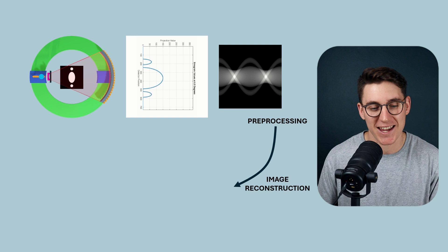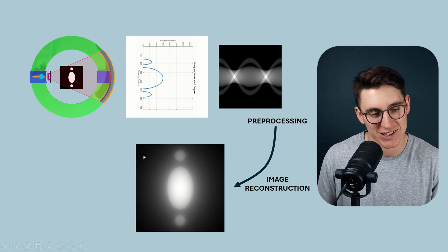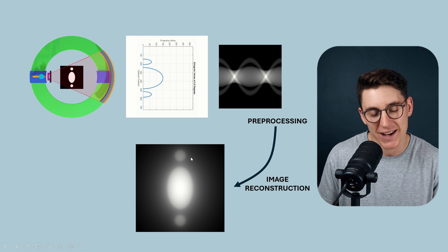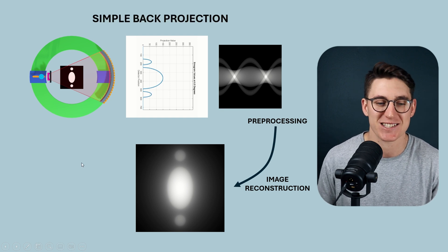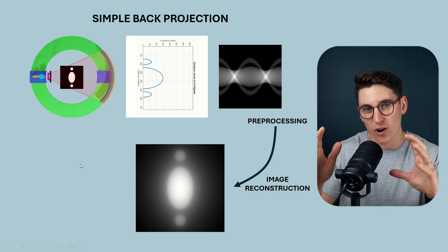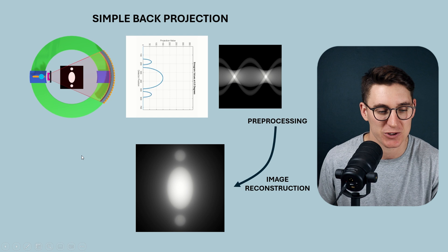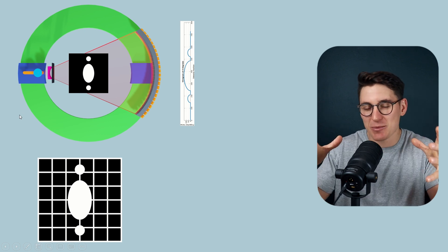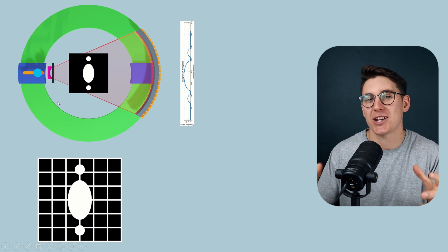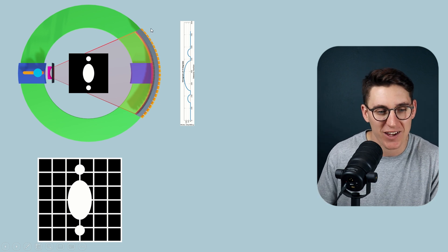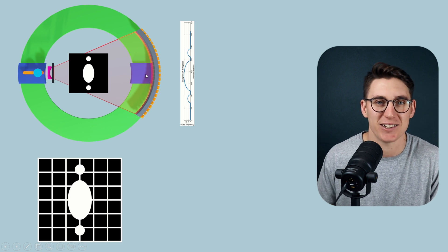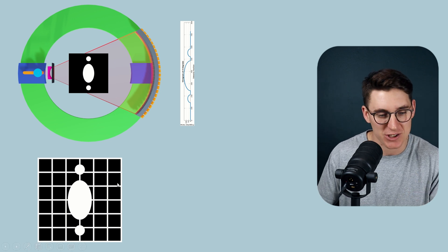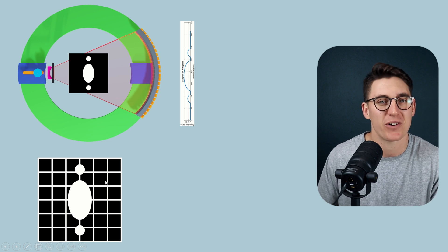The process we're going to look at today will generate an image that's not a perfect representation of what's actually happening within the patient, but we can see the underlying structures and where they sit. This process is known as simple back projection, and it will form the backbone for future image reconstruction techniques. When we're acquiring data, the CT machine has no idea what's sitting within it — the patient's anatomy is unknown. The only data we have is the transmitted X-rays hitting the detector. That's the eyes of the CT machine, and it's that data we use to calculate attenuation values.